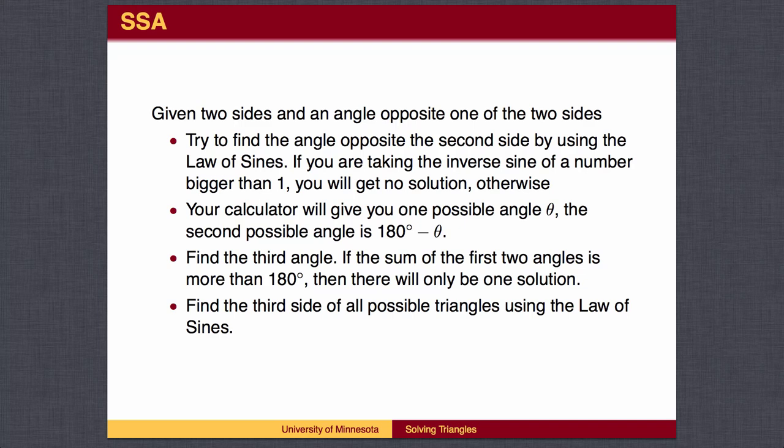When finding the third angle using the second quadrant possibility, if you get a negative answer, then only the first quadrant answer was valid.